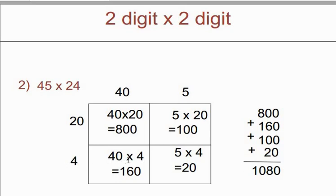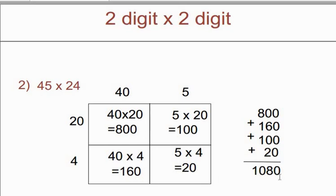Now make a summation of these 4 numbers: 800 plus 160 plus 100 plus 20, so you will get 1080 as the answer.